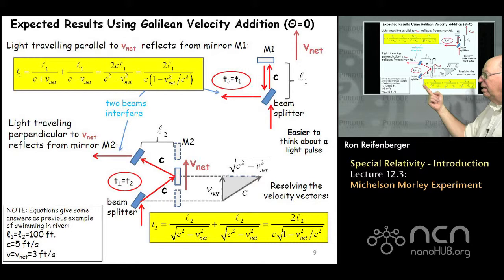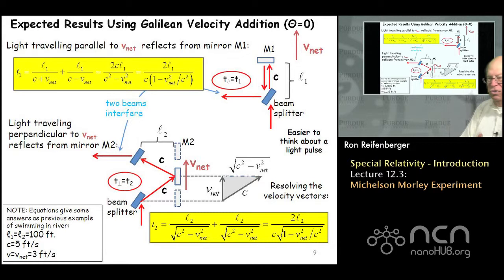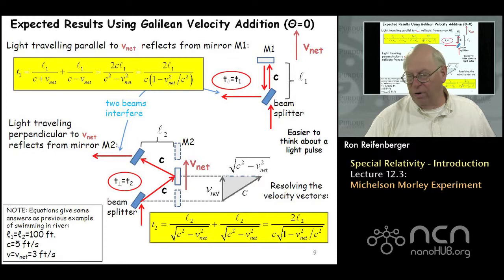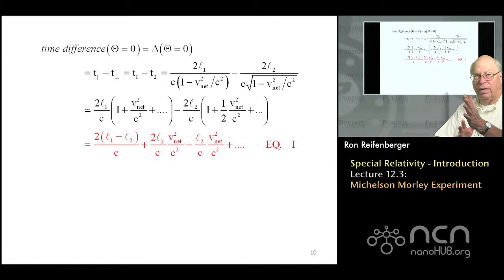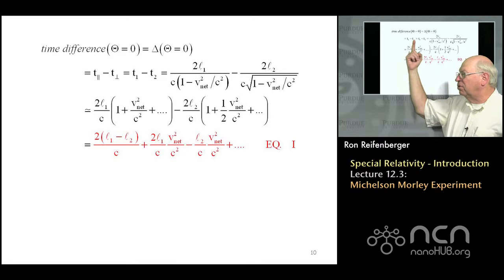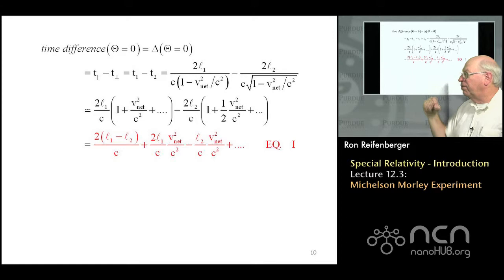This gives the time interval T1 for the beam to go up and back. The time interval T2 for the light beam to travel at right angles to the net drift velocity is calculated separately. In this case, the time interval to get from the beam splitter to mirror M2 and back is exactly the same in both directions — directly analogous to the cross-river swimmer example.